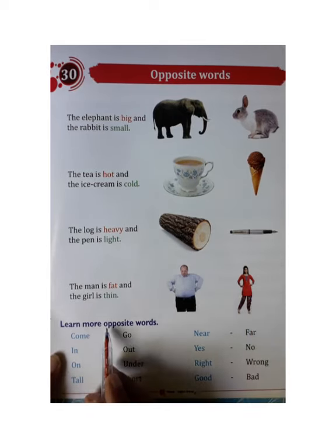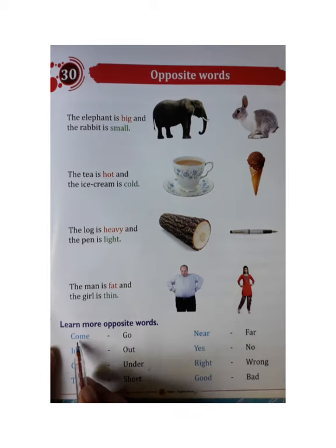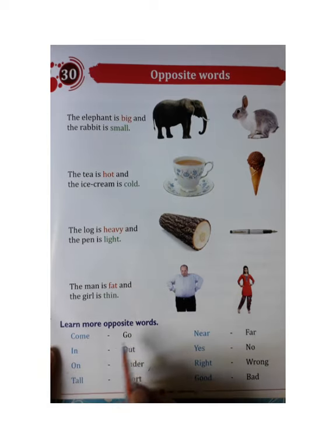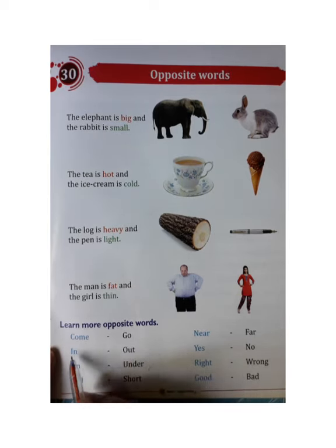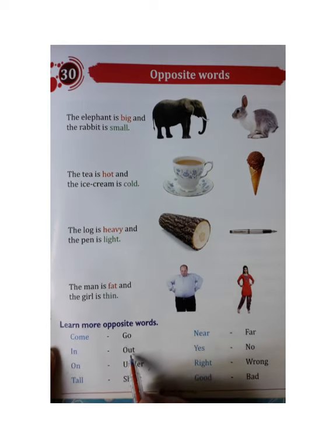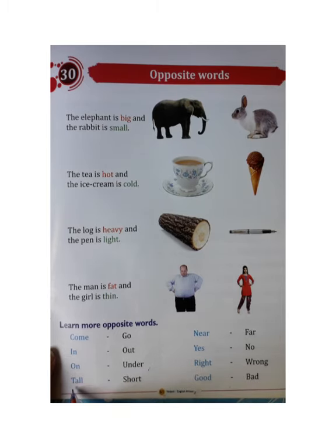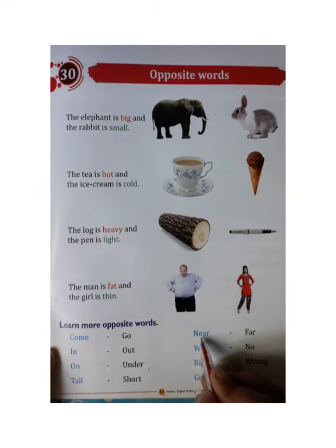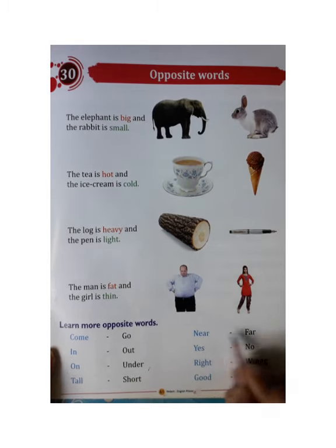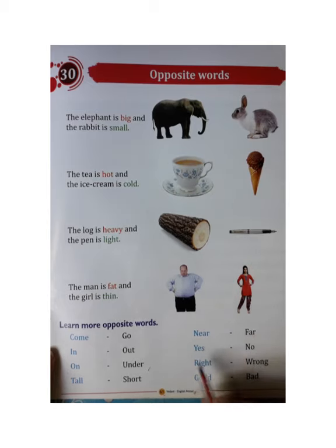Learn more opposite words. Come — come ka opposite go. In — in ka opposite out. On — on ka opposite under. On yani par, under yani niche. Tall yani lamba, short yani chota. Near — near ka opposite far. Near yani paas, far yani door. Yes yani haan, no yani nahi.